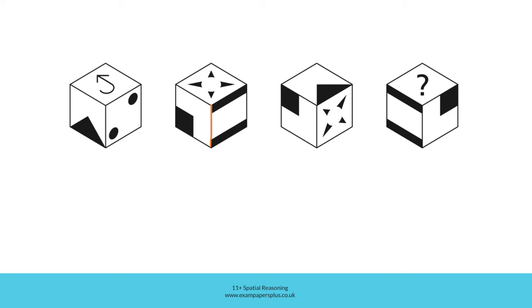That same edge is present in the final view of the cube. Because the two figures appear the opposite way round to how they appear here, it must mean that this cube is in the opposite orientation. In other words, when the cube is positioned like this, it will be this figure which is at the bottom of the cube underneath.